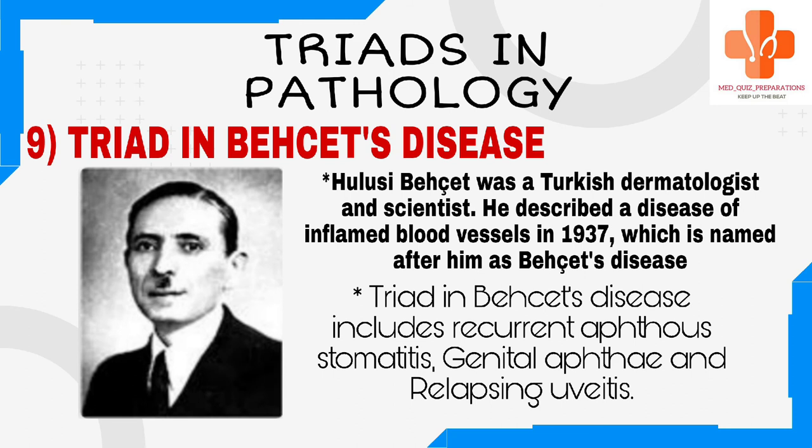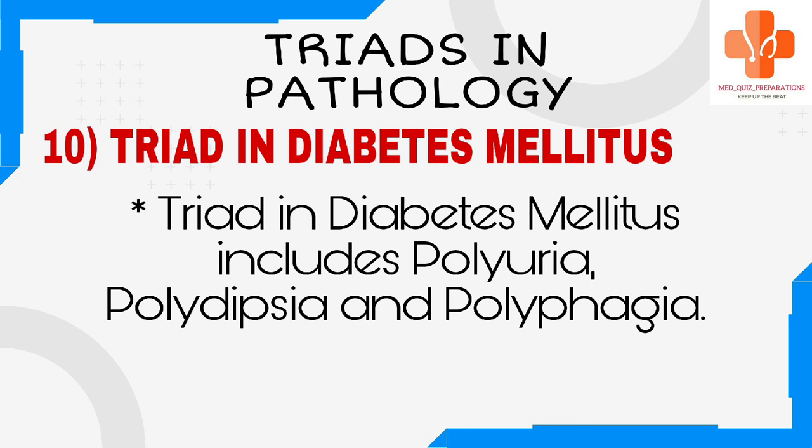Hulusi Behçet was a Turkish dermatologist and scientist. He described a disease of inflamed blood vessels in 1937, which is named after him as Behçet's disease. Triad in Behçet's disease includes recurrent aphthous stomatitis, genital aphthae, and relapsing uveitis. Triad in diabetes mellitus includes polyuria, polydipsia, and polyphagia.